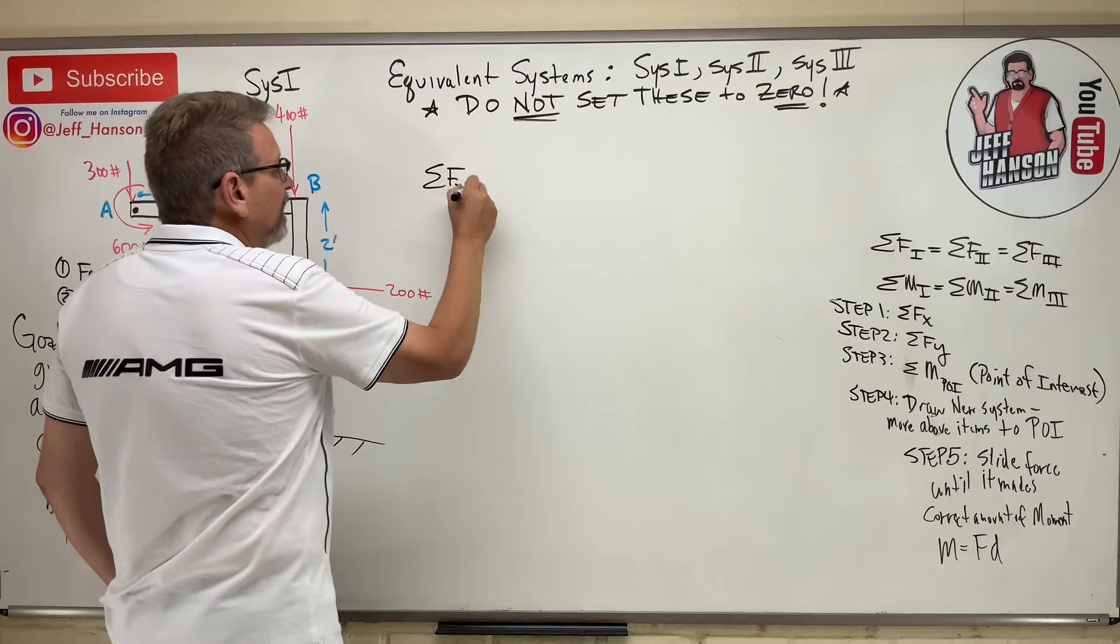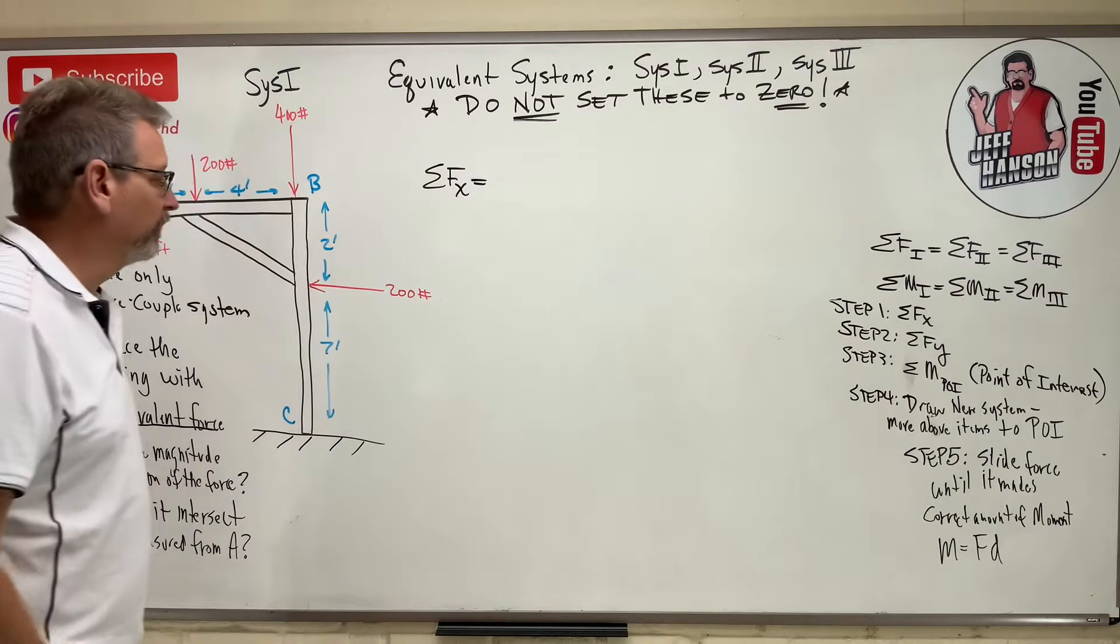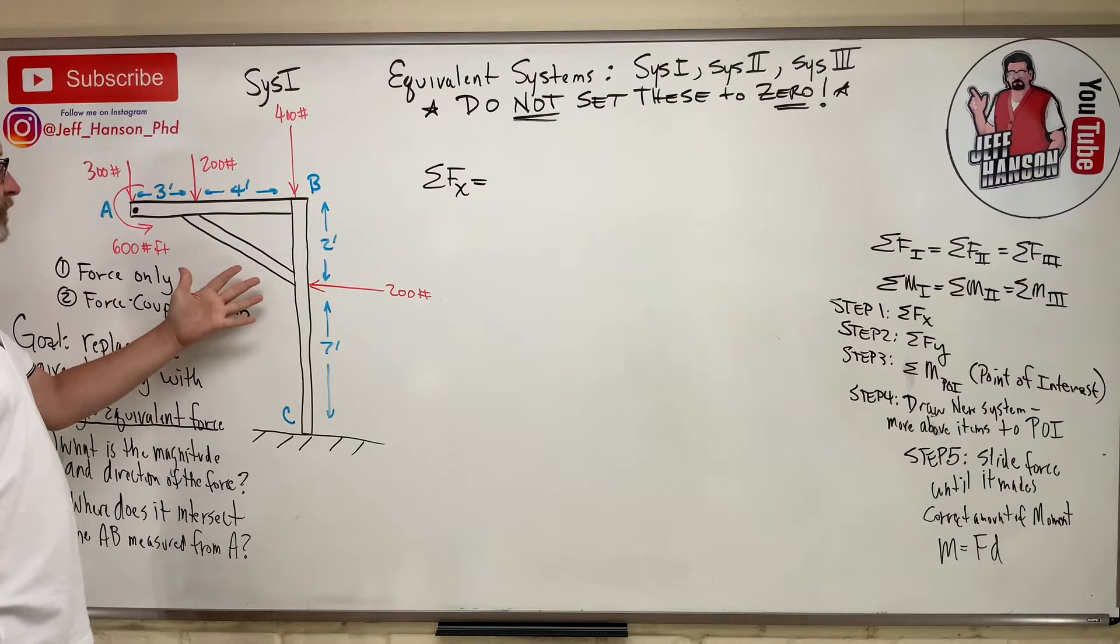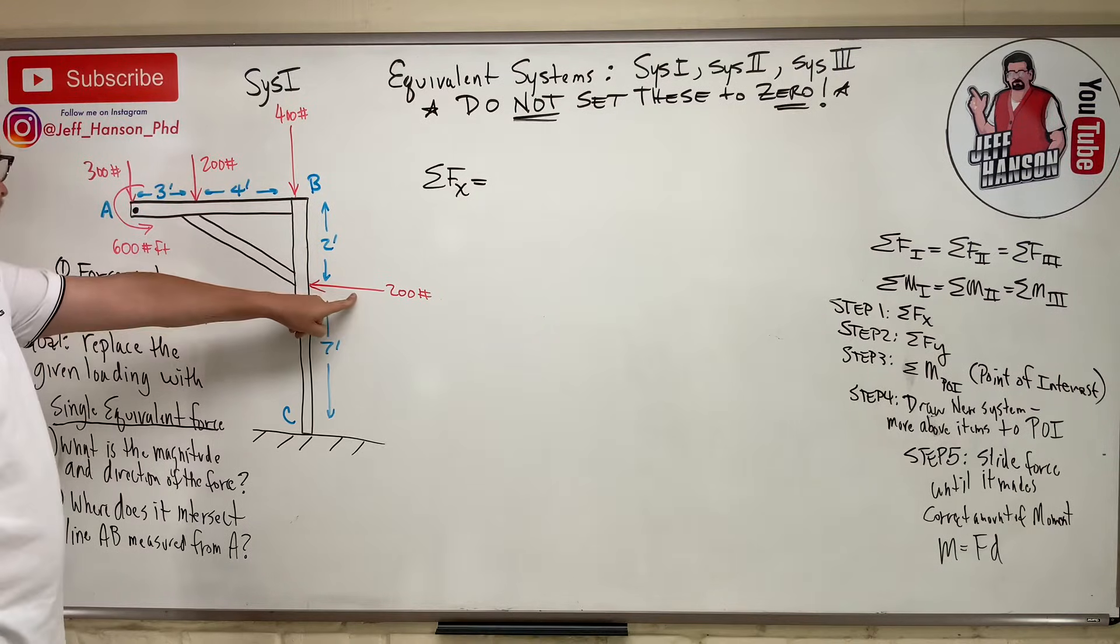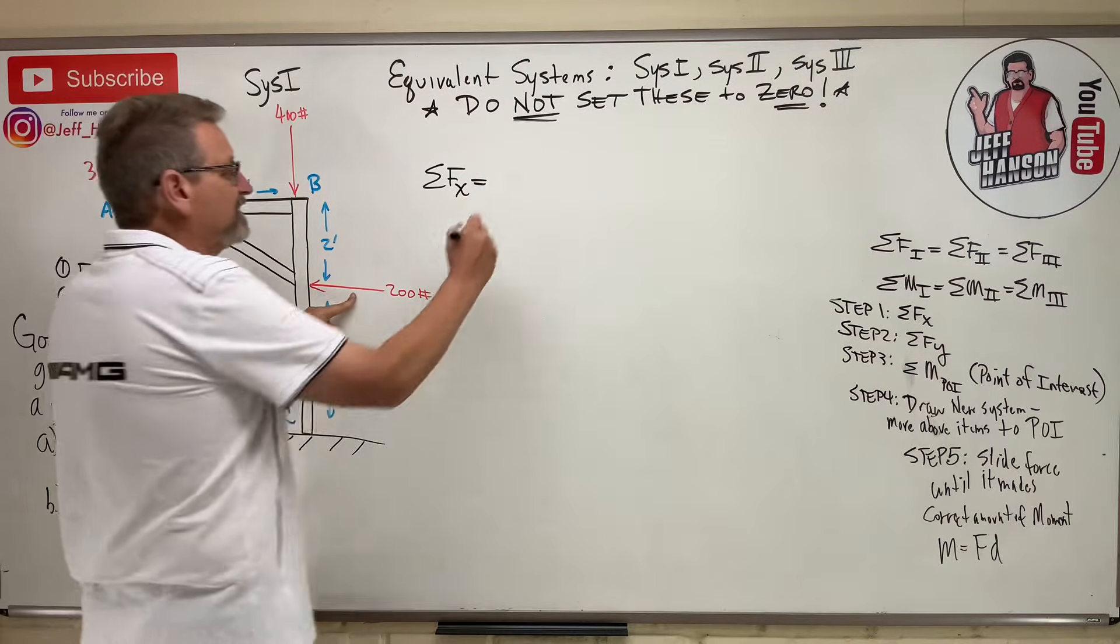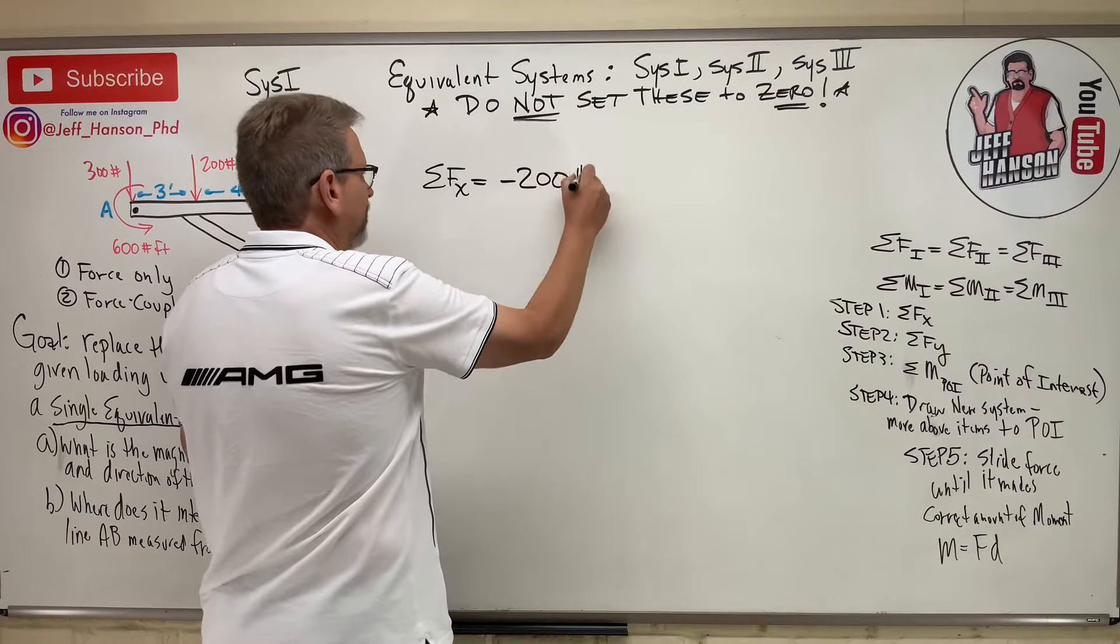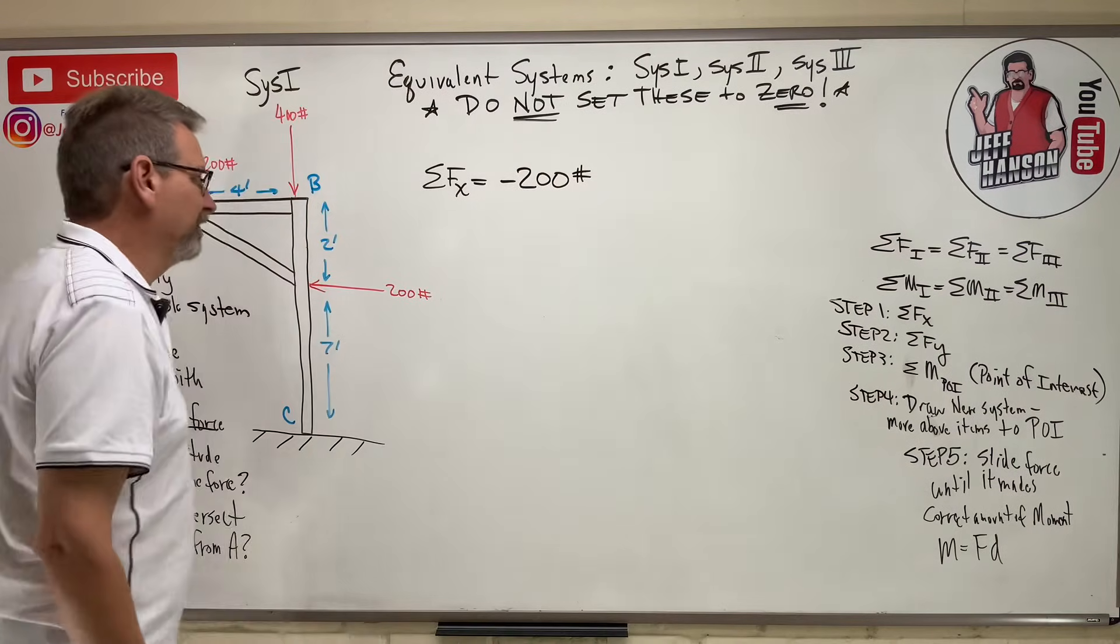So, let's just follow the recipe here. Sum the forces in the x. Don't set them equal to 0. What do you see here in the x direction? That's it. Well, that's going to be easy. 200 pounds to the negative.